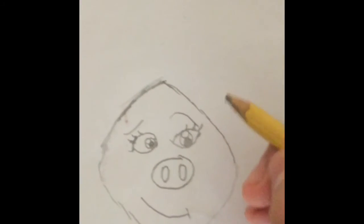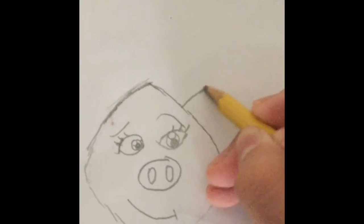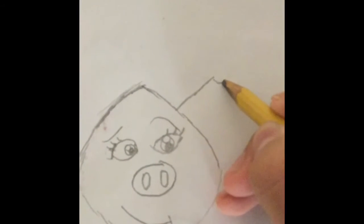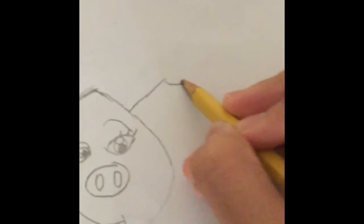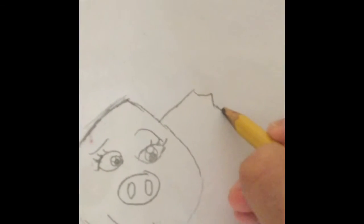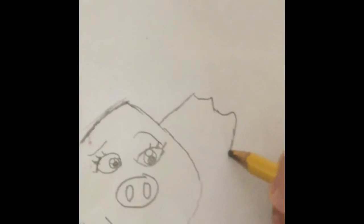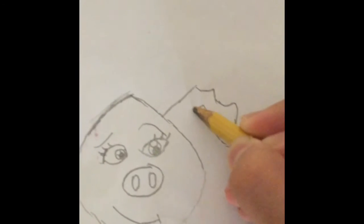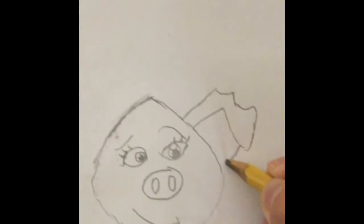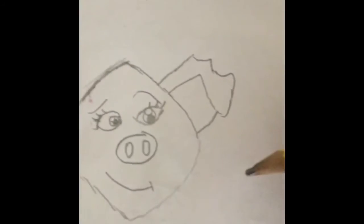Next I draw the ears like this. Then a curve, then I draw another curve going down. And there you go, the first ear.